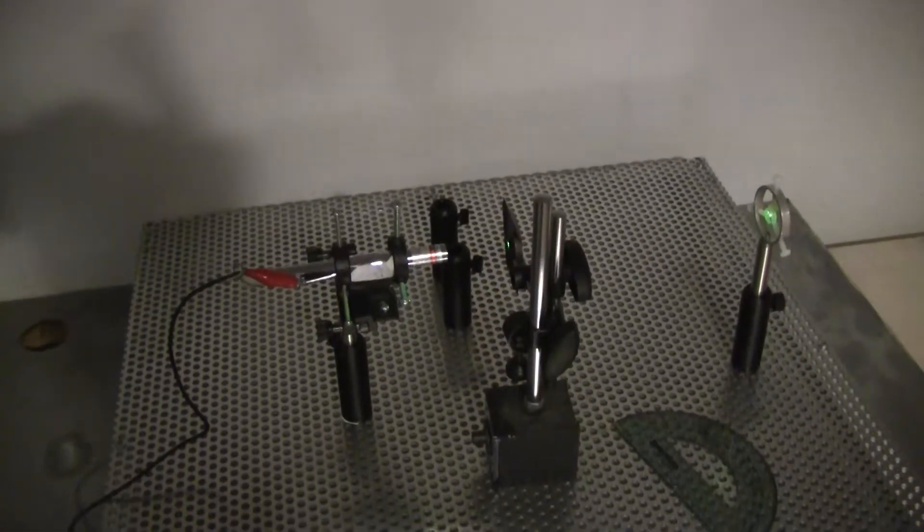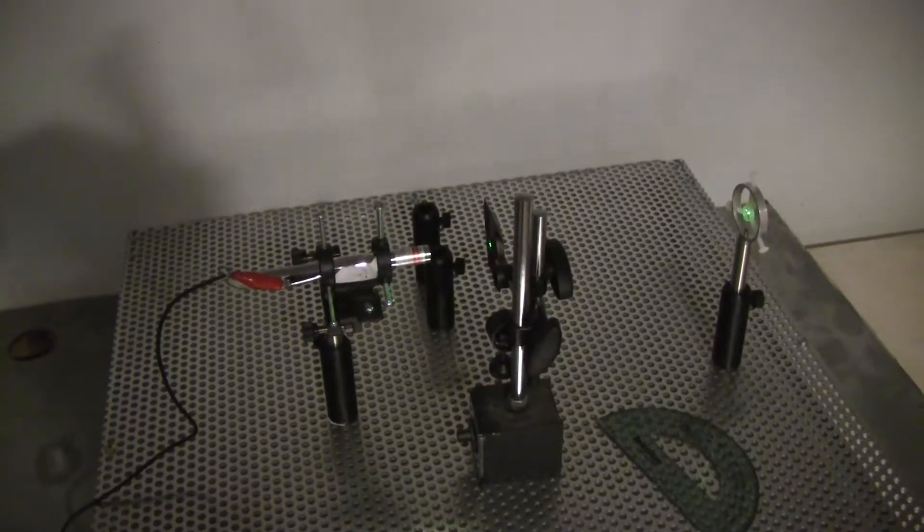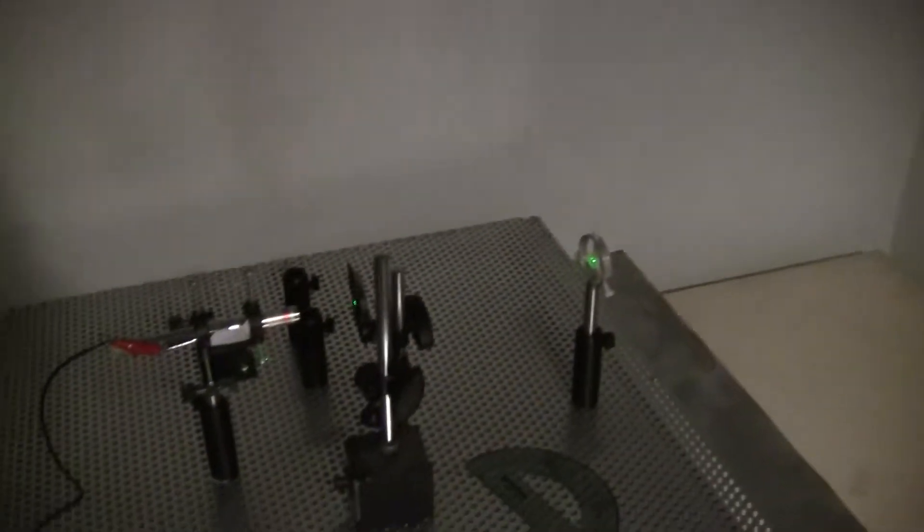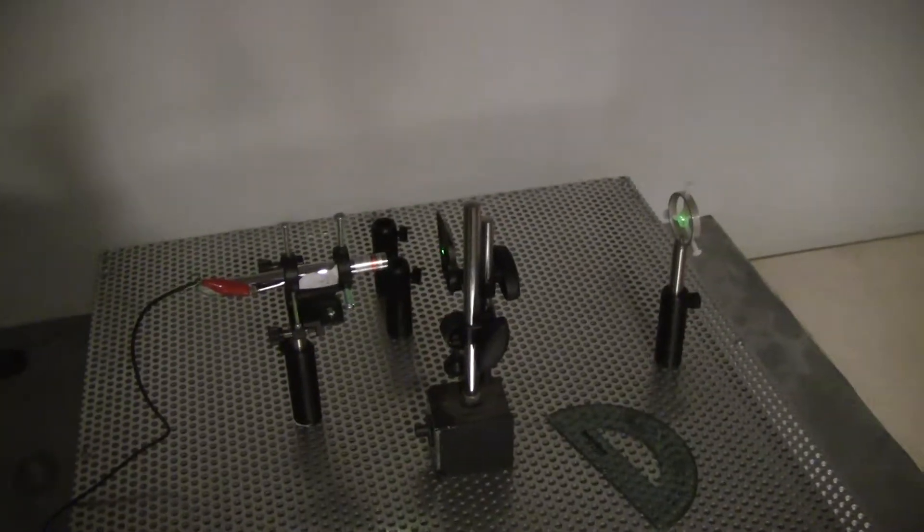if this slit is then tilted closer and closer to the horizontal, the interference pattern should disappear, and this proves that the wave theory is falsified. So we're just going to try this out and see if we get that result.